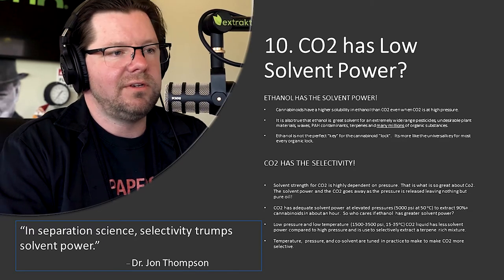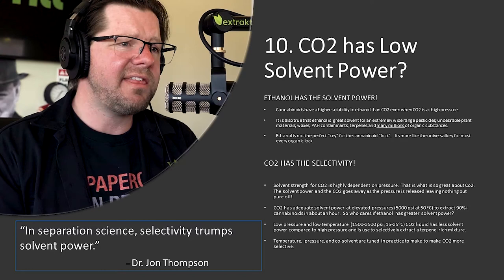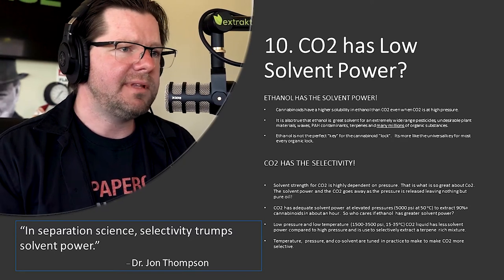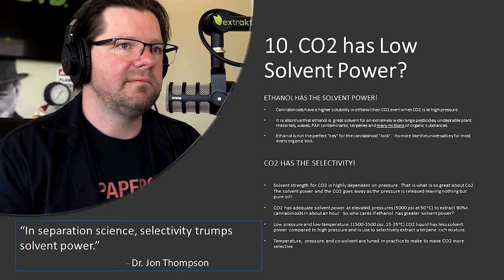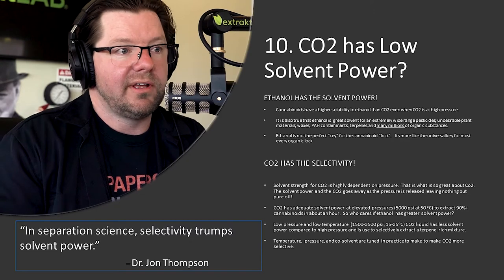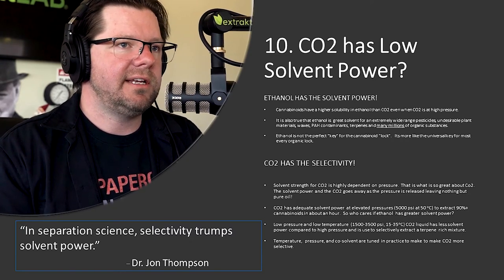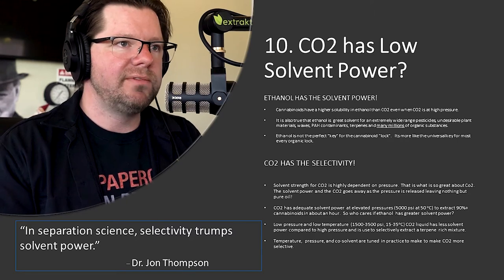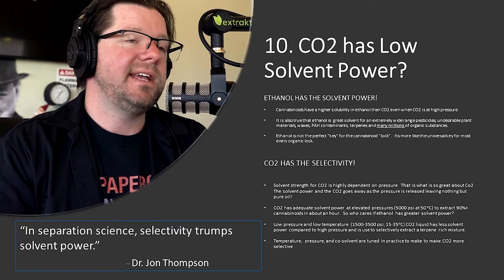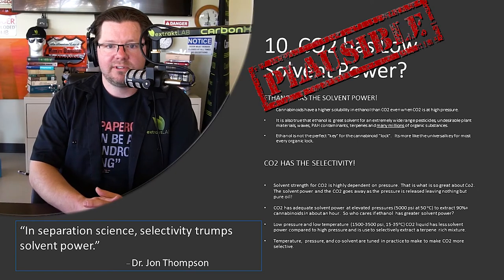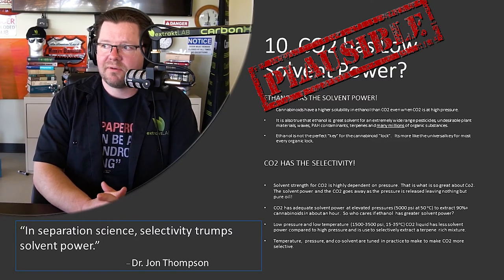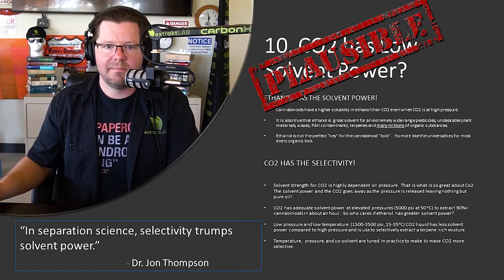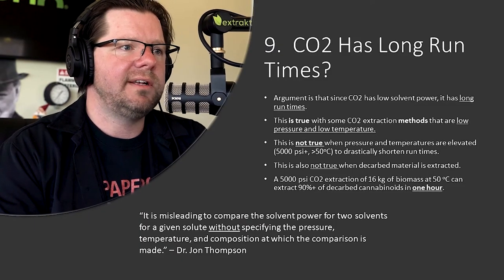Temperature, pressure, and co-solvent are tuned in practice to make CO2 more selective. You can also combine CO2 and ethanol — ever since we started making equipment in 2015, we've had a co-solvent pump on our system. Adding a small amount of solvent makes a huge difference. This argument is plausible — CO2 does have lower solvent power than ethanol — but selectivity trumps solvent power, and in separations, selectivity is the name of the game.